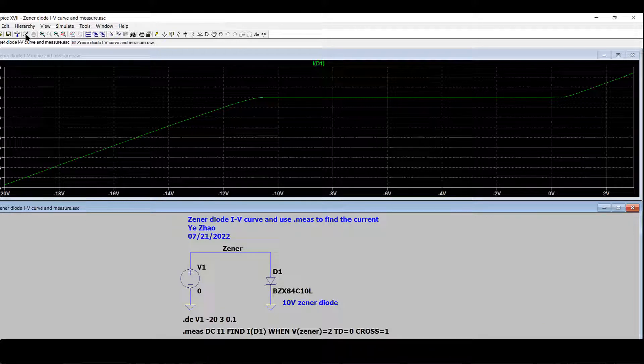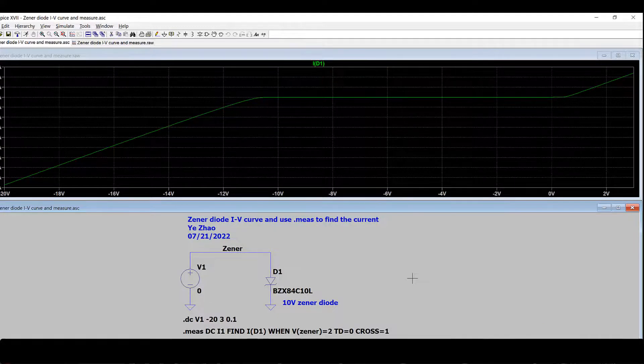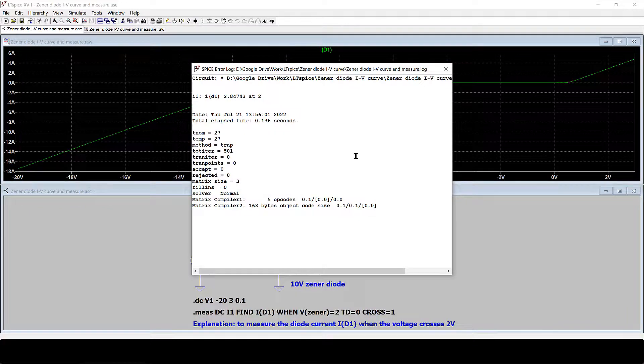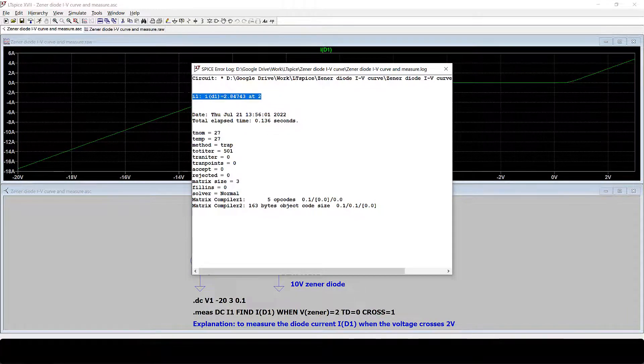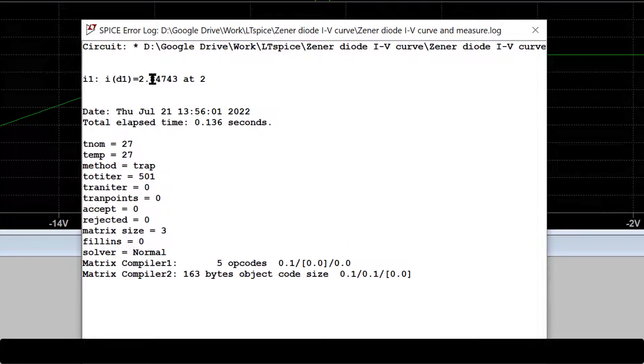And just run the simulation one more time. You use Ctrl+L. You go to the results. You can see the result is 2.847A at 2. The 2 means when the voltage is 2V.